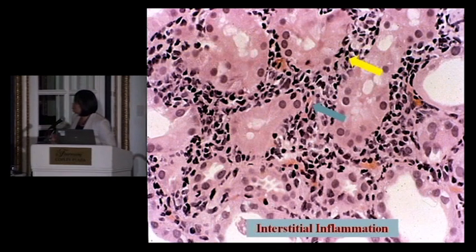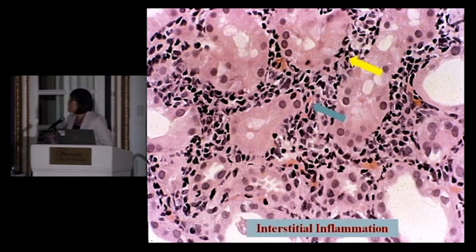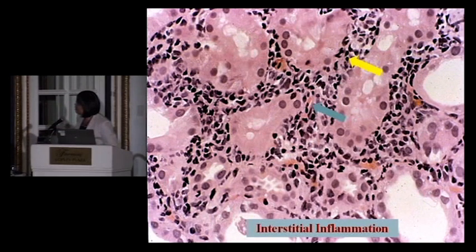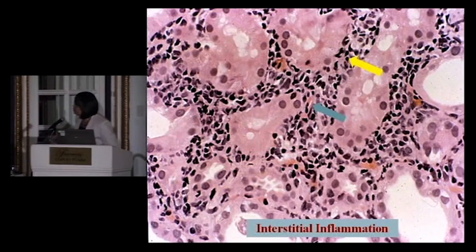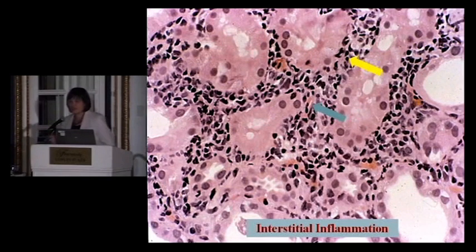This slide shows tubules that look relatively preserved; however, there are many interstitial inflammatory cells. The yellow arrow is indicating a lymphocyte, with a few eosinophils here as well. This is an interstitial inflammation pattern.